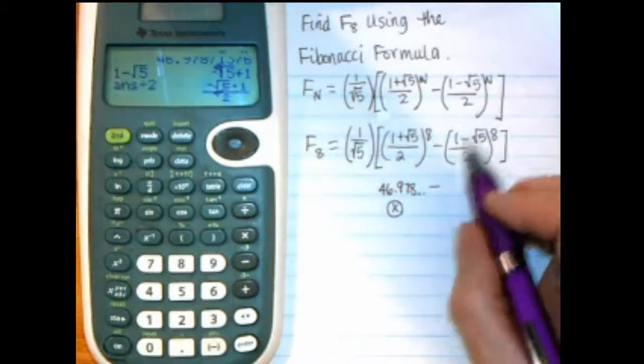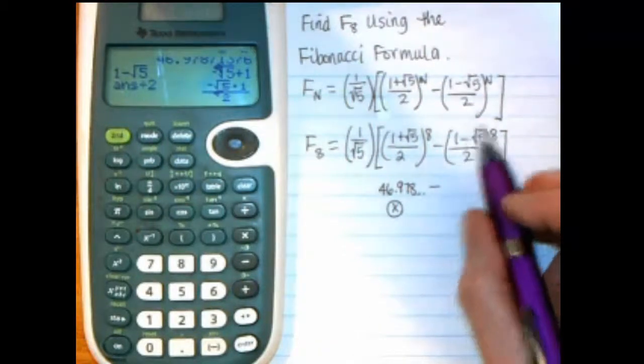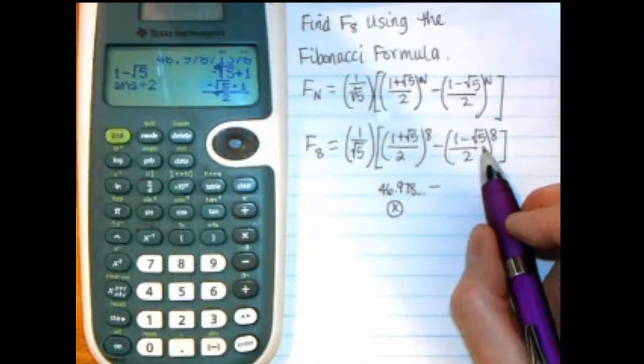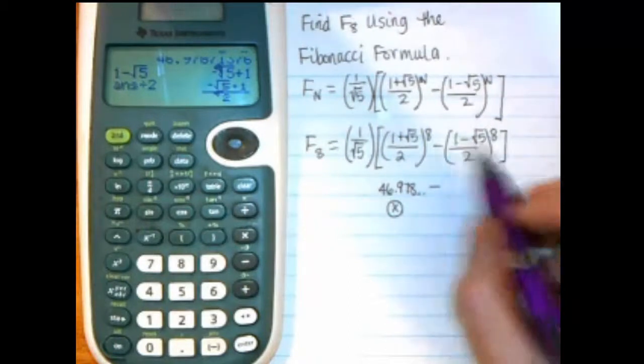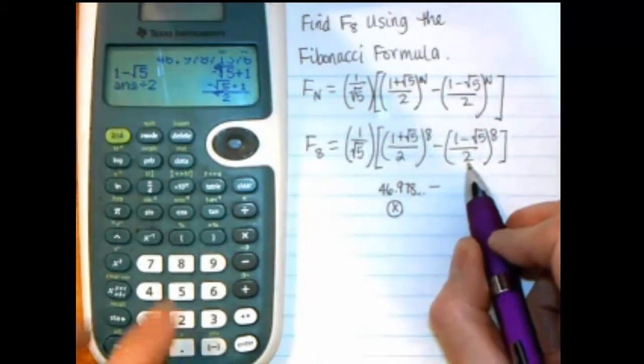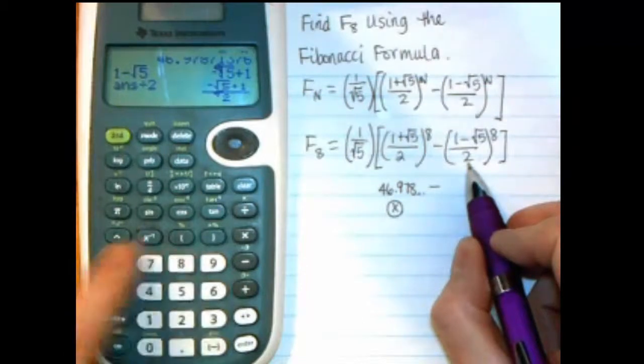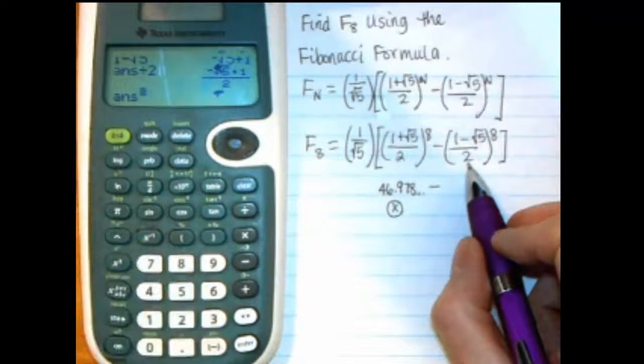And it's showing it kind of in backwards order, but the negative is with the square root of 5, so that's correct, and a positive 1, and then over 2. And then I have to take that 2 to the 8th, so I'm going to use the caret button here for the 2 to.